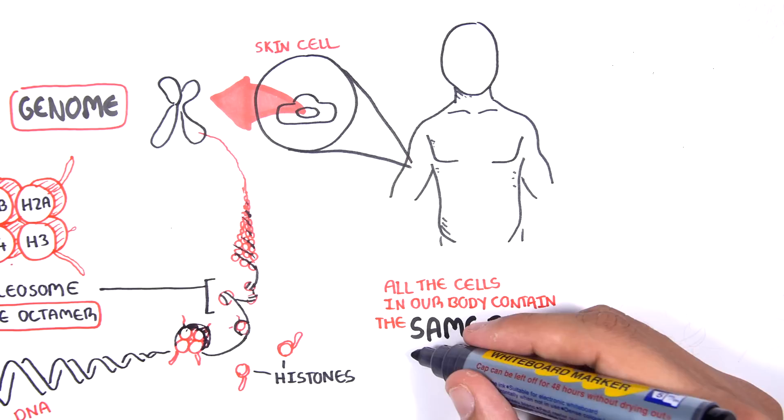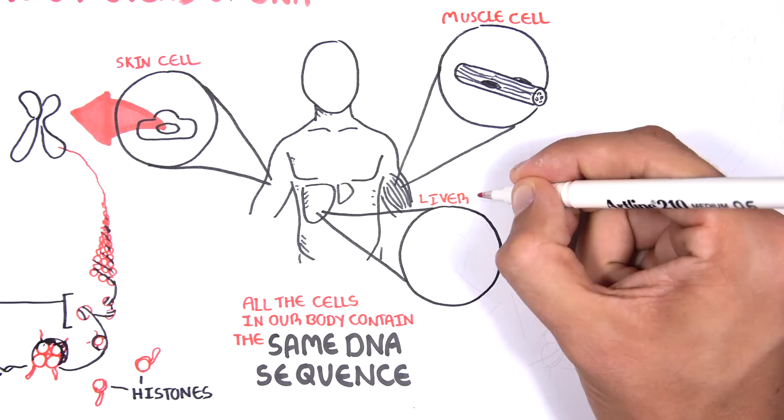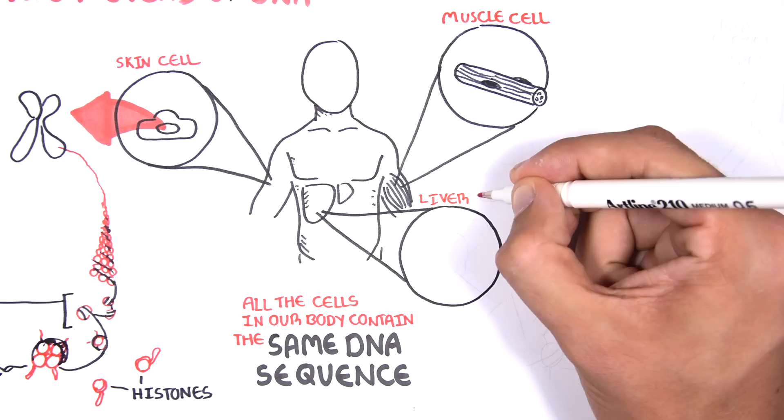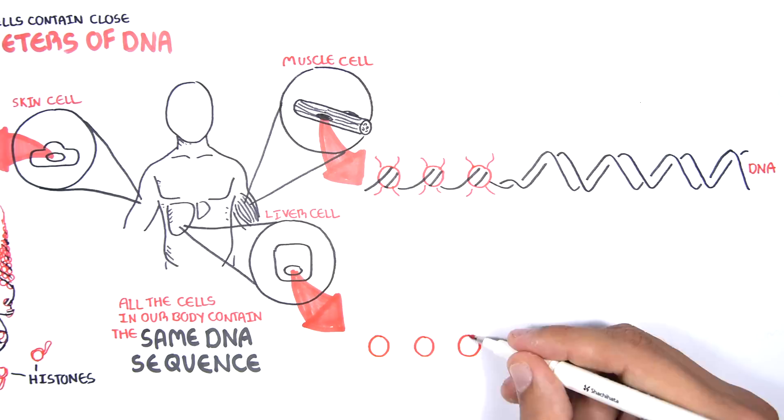All the cells in our body contain the same DNA sequence. Skin cells, muscle cells and liver cells contain the same DNA sequence. Yet all these cells have different structures and functions.